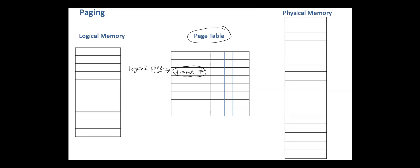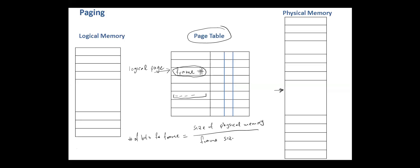The frame number is read from the page table and concatenated with the page offset to obtain the physical address. The number of bits required in the frame number field depends on the number of frames and equals the size of physical memory divided by the frame size. This field is required in all page tables.